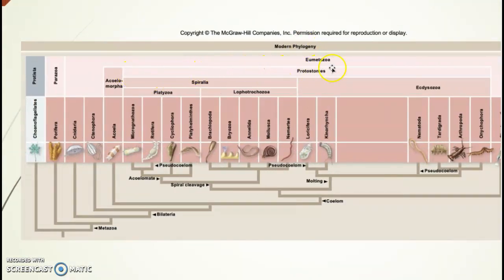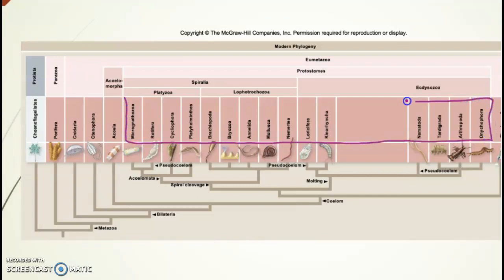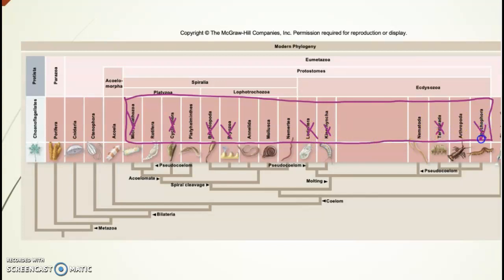Zooming in: here are protostomes, and underneath we have Spiralia and Ecdysozoa — those are the two groups. Under Spiralia we have Platyzoa and Lophotrochozoa. The purple lines indicate the phylum level within protostomes. We are not covering all phyla — there are many others we won't worry about since we don't have time. The seven phyla left unchecked are the ones I want you to be comfortable with.